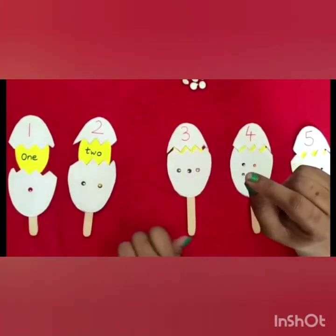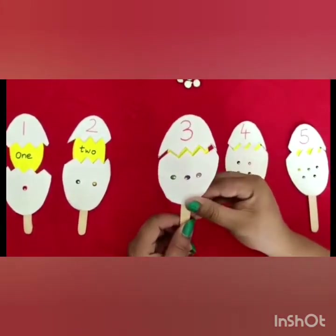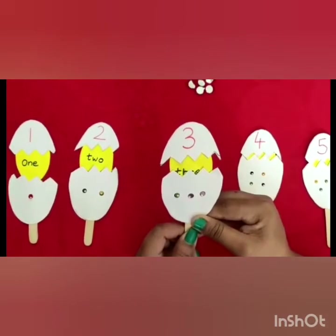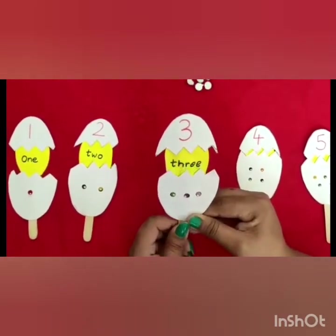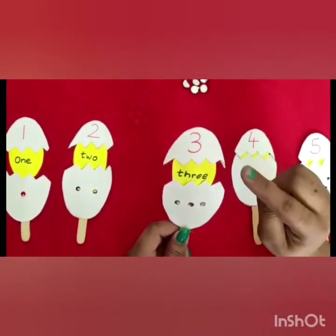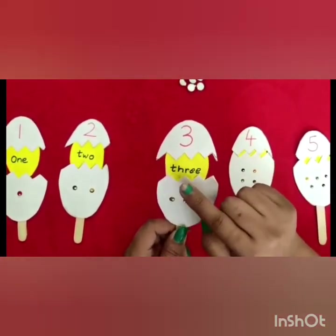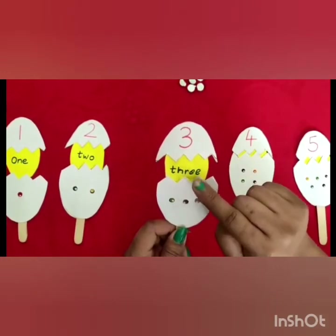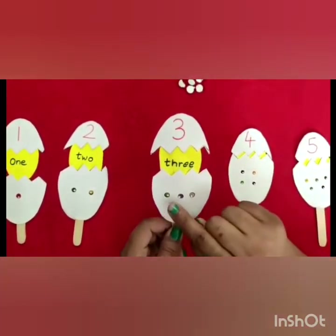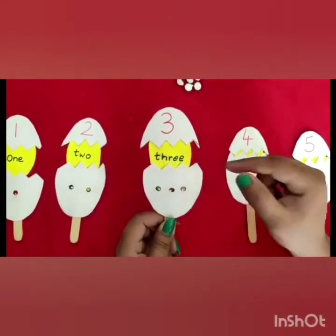So, next number is 3. Here comes the number 3. Let us see the number name. 3 — T, H, R, E, E — 3. Very good. And 1, 2, 3. Yes, very good.